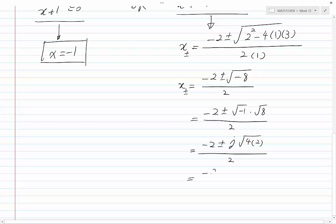Now, this is equal to minus 2 plus or minus j, and we have root 4 times root 2 divided by 2. This is minus 2 plus or minus j, 2 root 2 divided by 2.